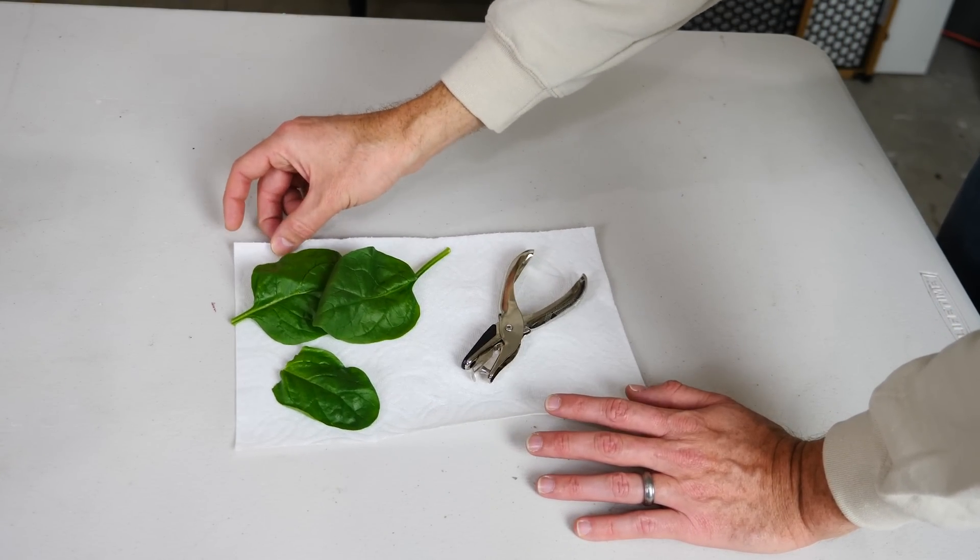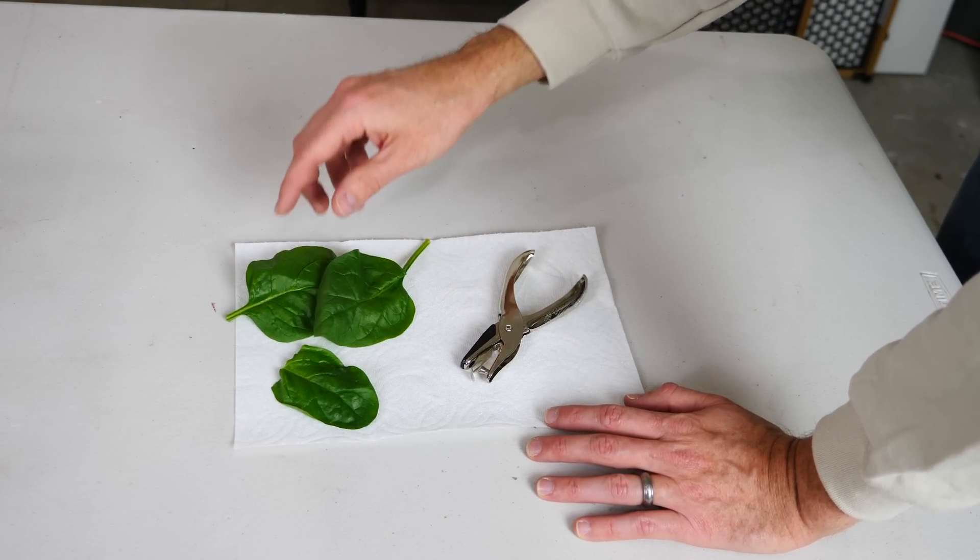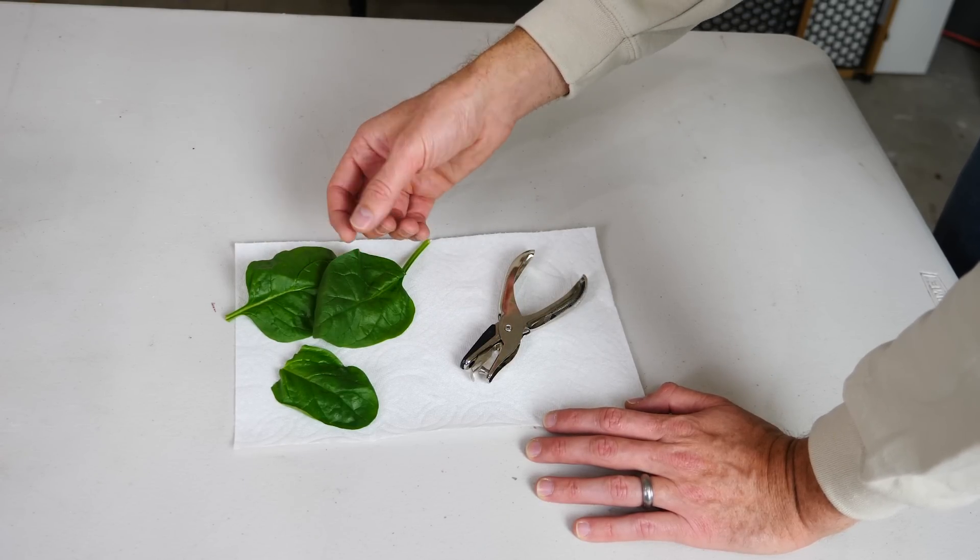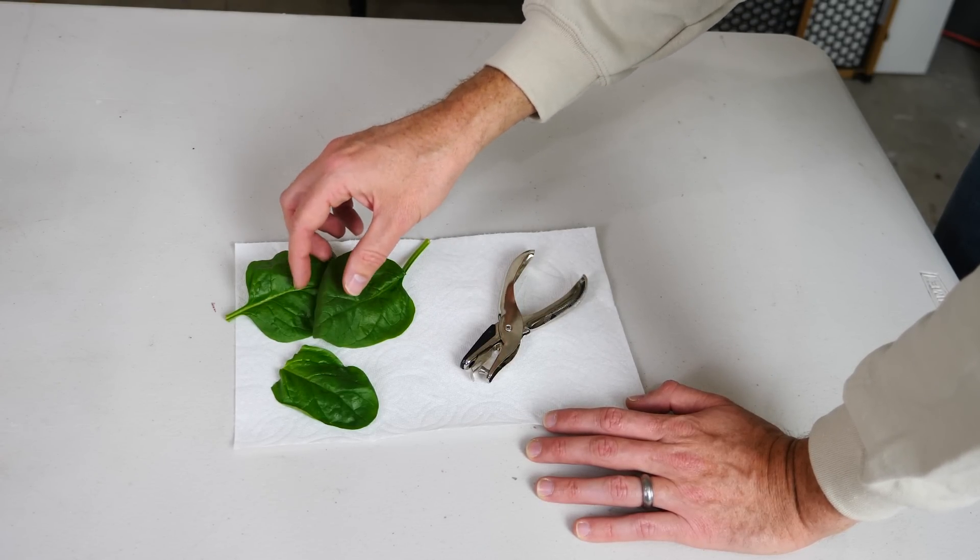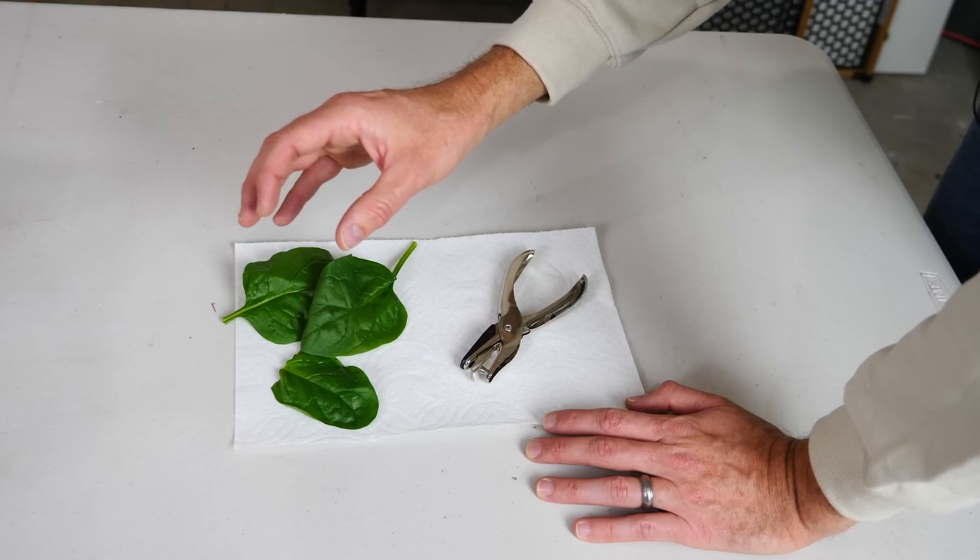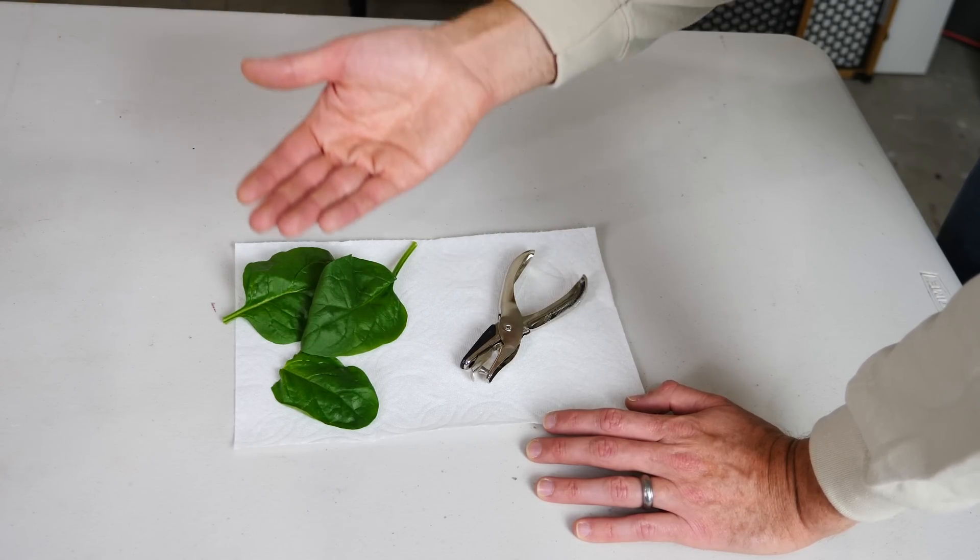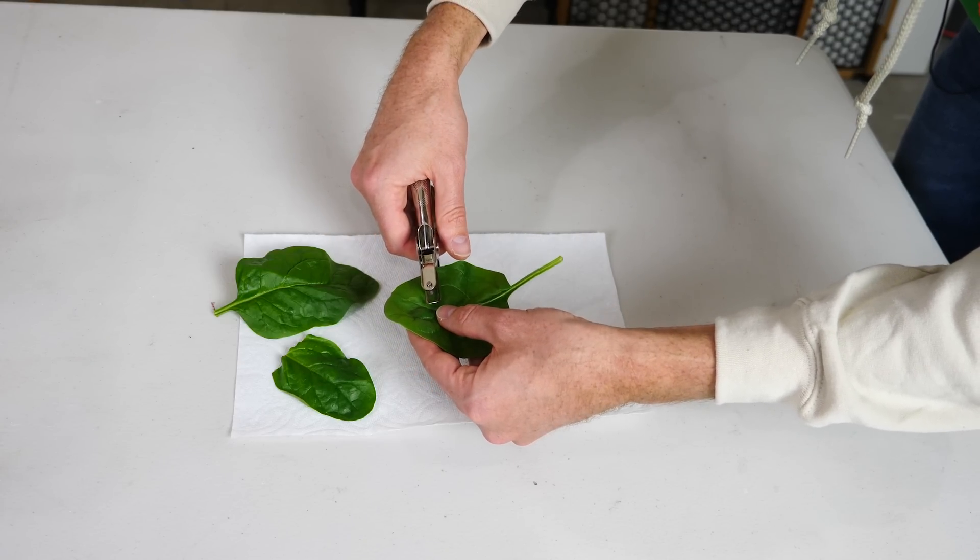In order to try to see photosynthesis happening, what I'm going to use is spinach leaves. Now normally leaves float in water, but what I'm going to do is suck out the air that's in between the cells of these leaves and the air is going to come out and that's going to cause the spinach leaves to sink down. So I need small pieces of the leaf here.